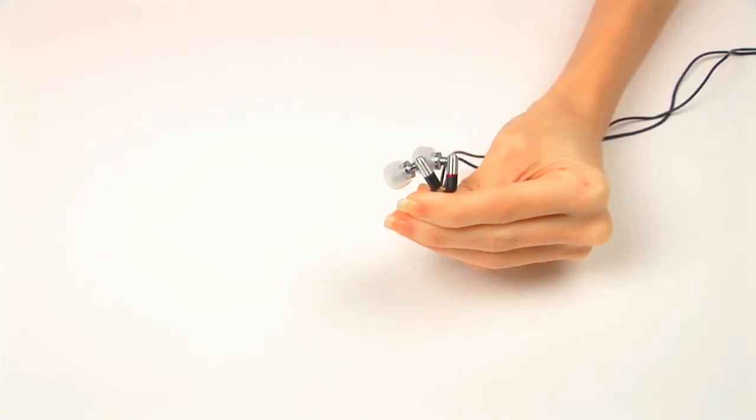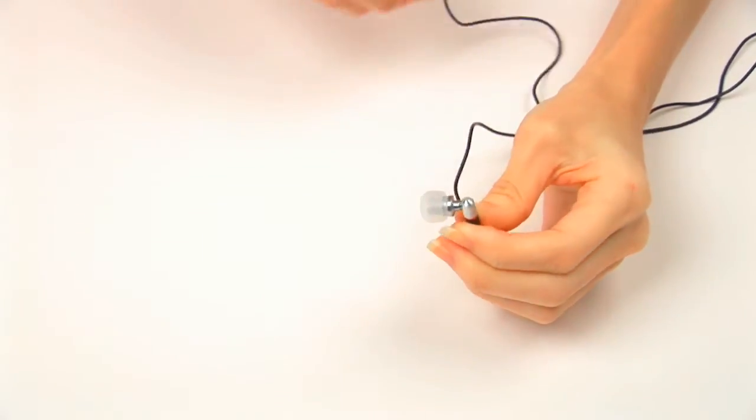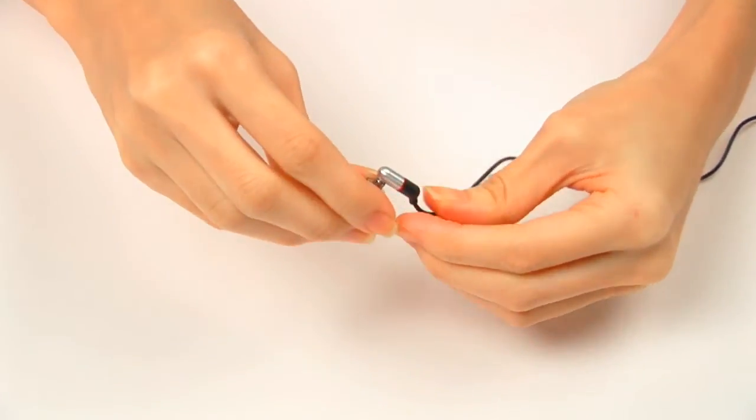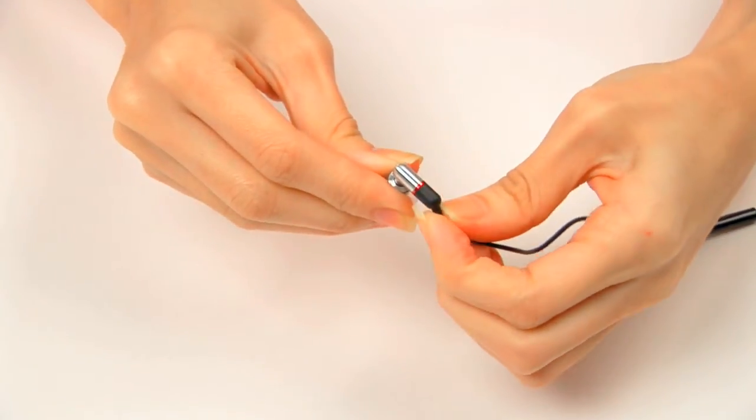Now, let's take a look at the headset. Here we have the HS930i headset with an inner design to block out ambient noise.